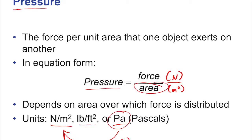In terms of base units, since the Newton is kilogram·meter per second squared, and we're dividing by square meters, we get kilograms over meter·seconds squared. Those are the units of the Pascal in base units, because N is derived — it's kilogram·meter per second squared. So those are the units of pressure.